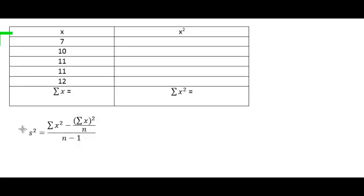So the shortcut formula is written over here. s² equals the summation of the squared x's, minus the summation of the x's squared, divided by n. All of that divided by n minus 1. I know that looks like a handful, but you'll see it's not too bad, especially if we write our numbers in a table form like I did.